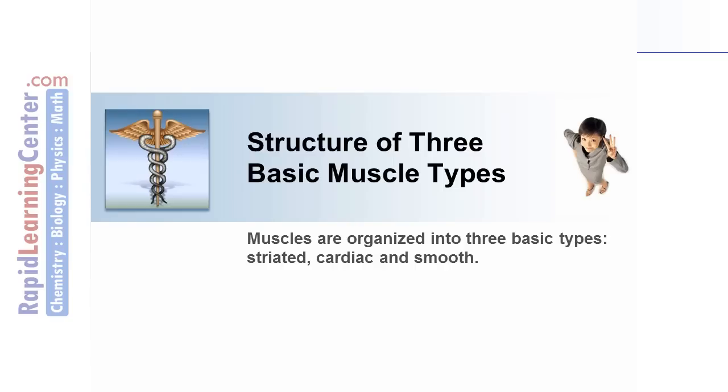Muscles are organized into three basic types: striated, cardiac, and smooth.